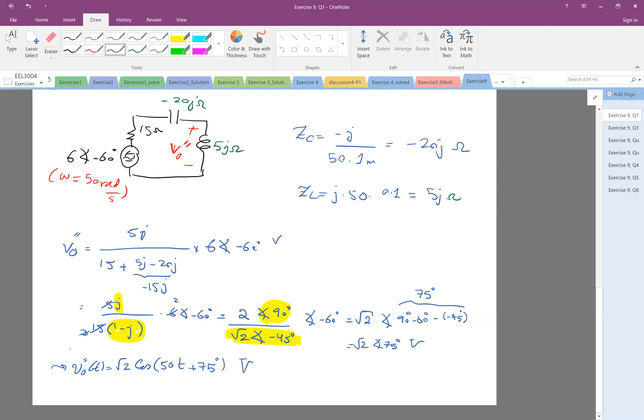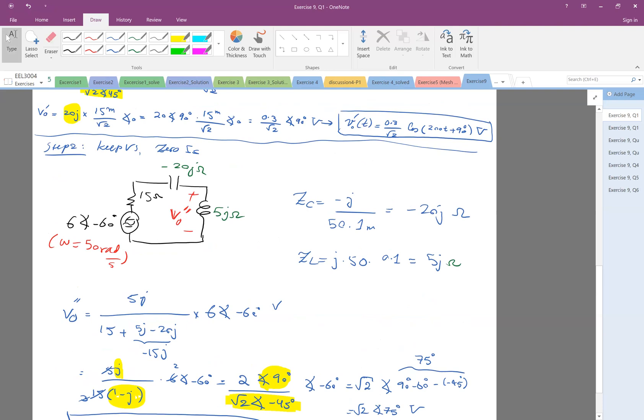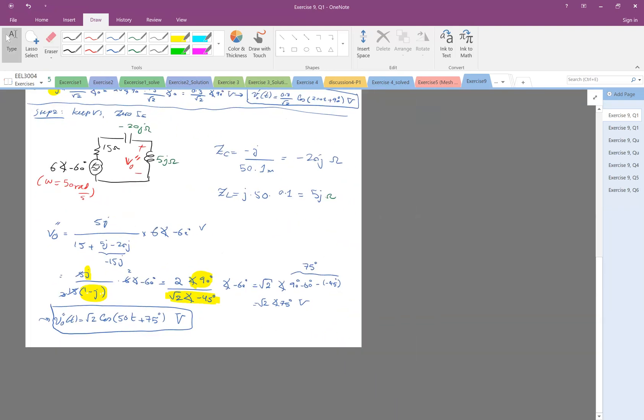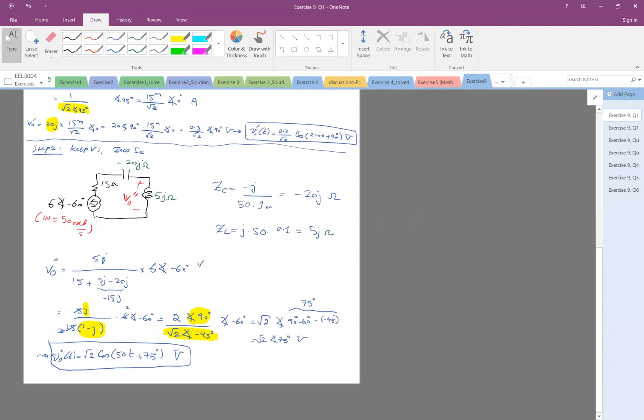Now the last step is just to add V0 prime and V0 double prime. That's the basis of superposition. We separate the sources, you find the interested value, and then at the end, V0 which we are looking for is V0 prime plus V0 double prime. So this one plus this.